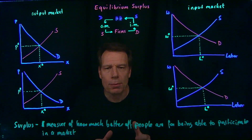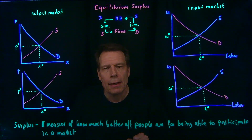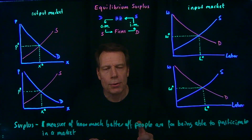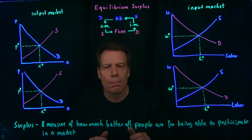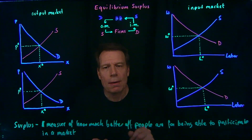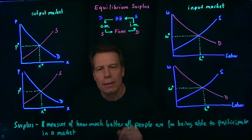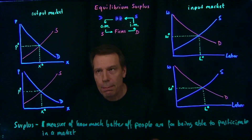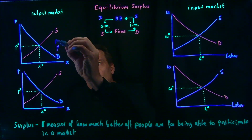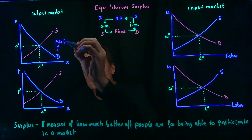Let's begin with the output market and first think about households or consumers. When we derive the demand curve for households, we said that households continue to purchase goods so long as the marginal benefit is larger than the marginal cost, and they stop when the marginal benefit equals the marginal cost. The demand curve tells us the marginal benefit for consumers or households.